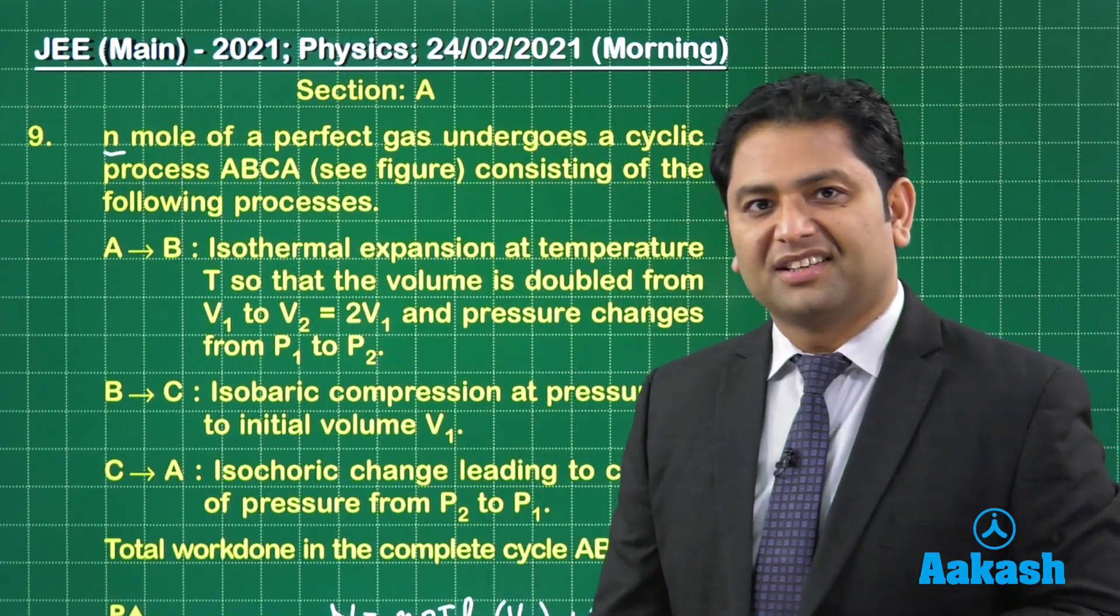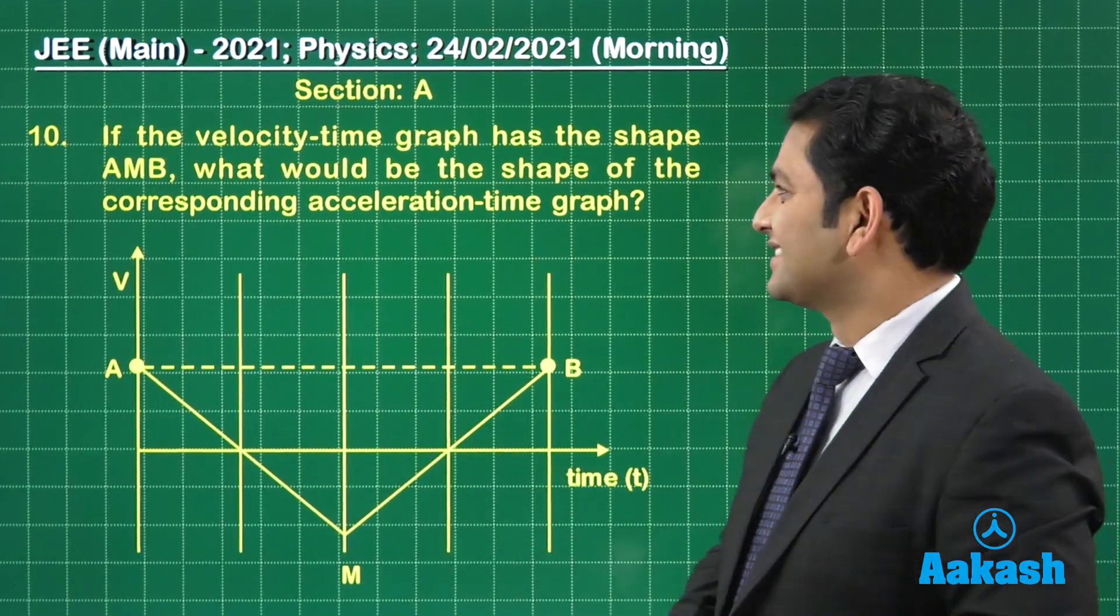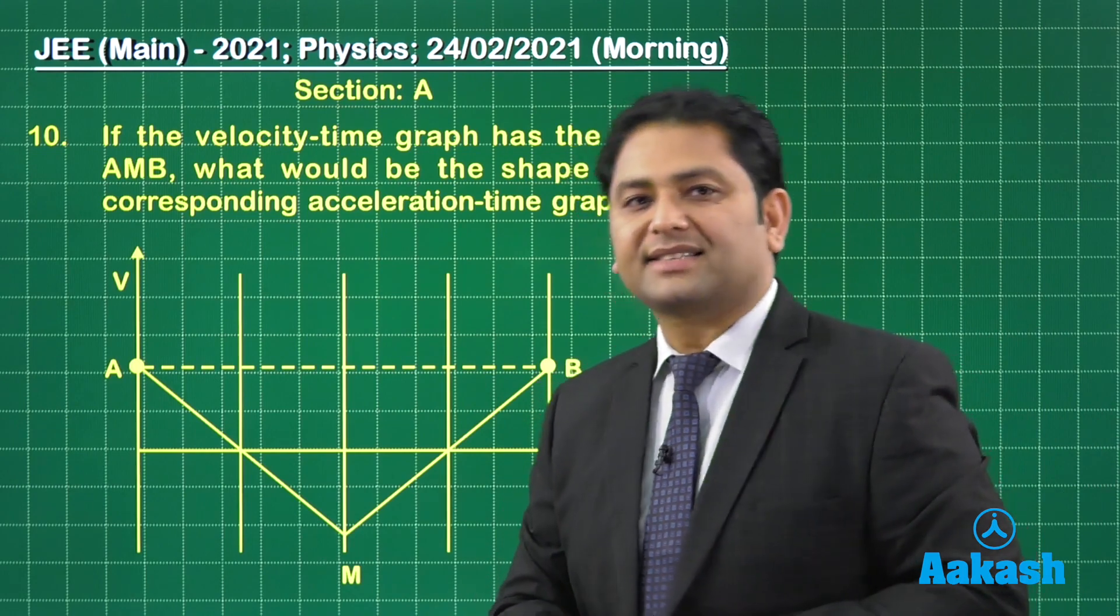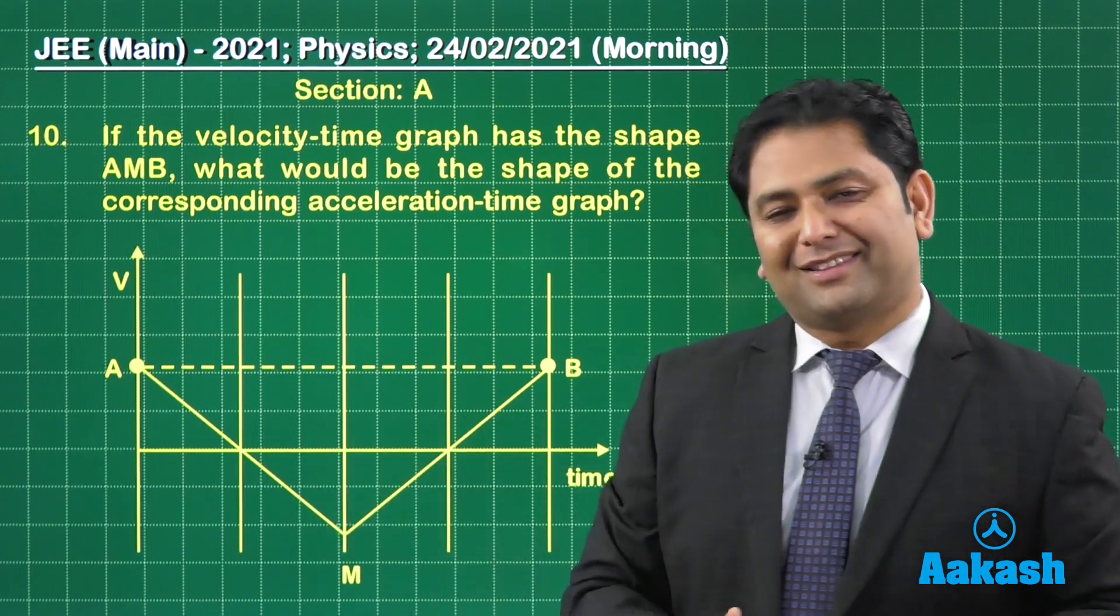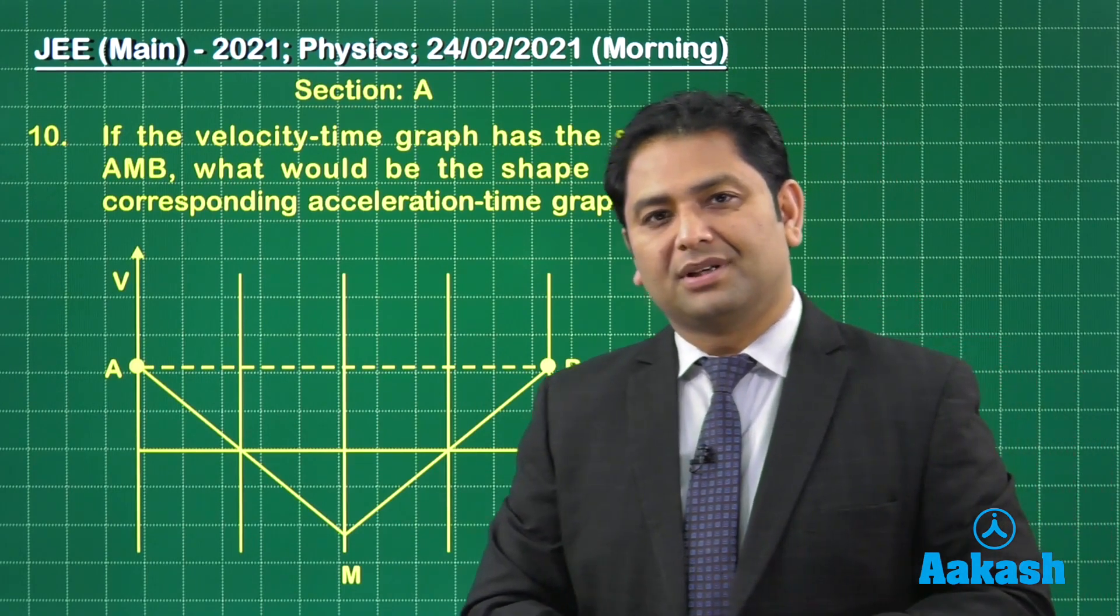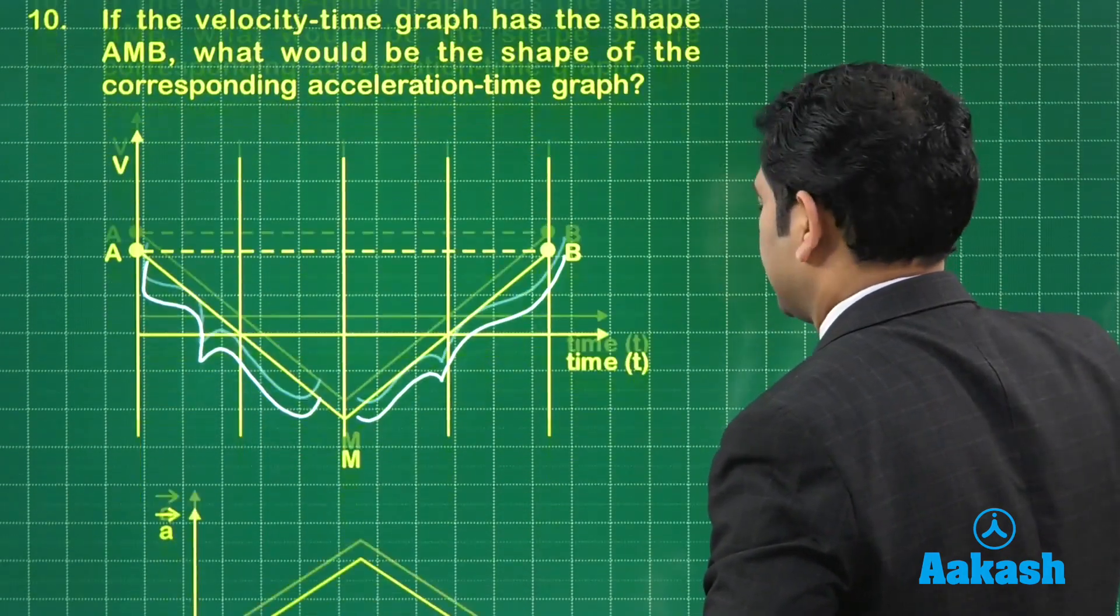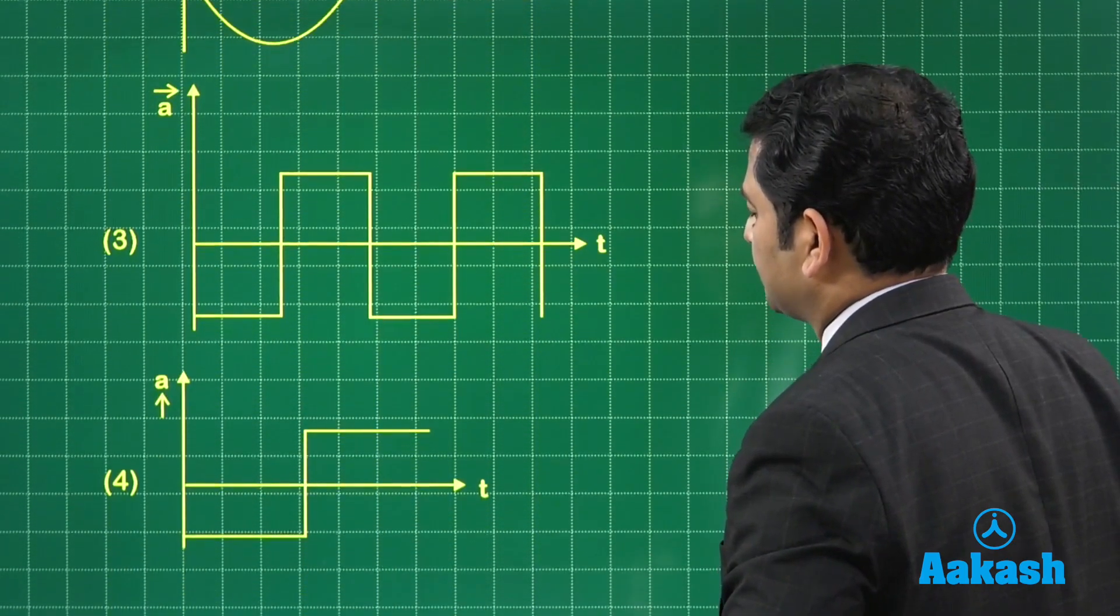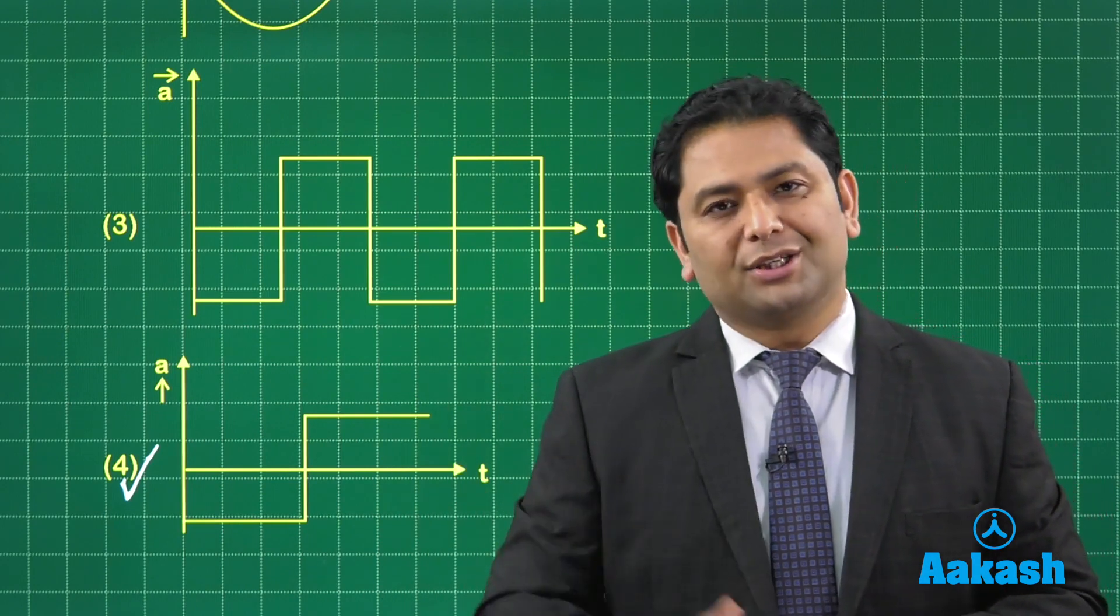Let's go to the 10th question from kinematics, the ever lovely kinematics. The velocity-time graph has been given and the shape is AMB. We need to calculate the acceleration-time graph. This is a gift given within that pressurized moment of the examination. If you have a VT graph, how do you compute the AT graph? By computing the slope. The slope of this graph is a negative constant, and for this, a positive constant. Where do I have first negative constant, then positive constant? Option number 4. That is the acceleration-time graph.